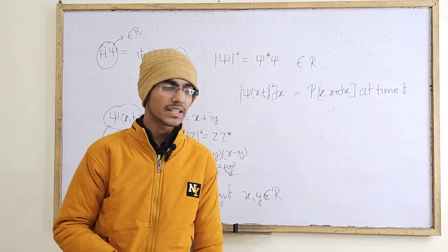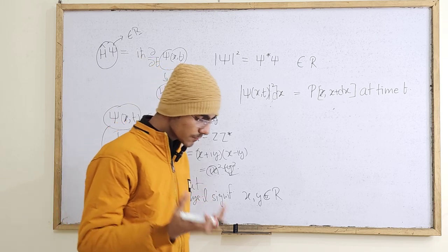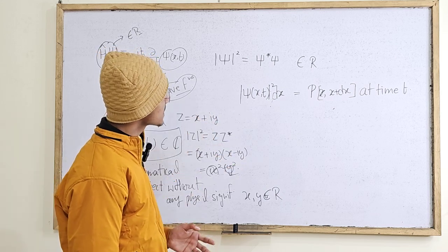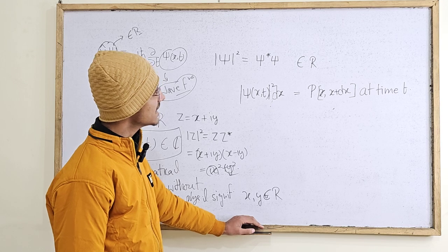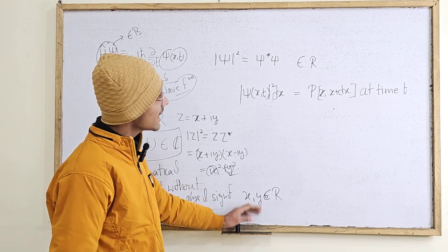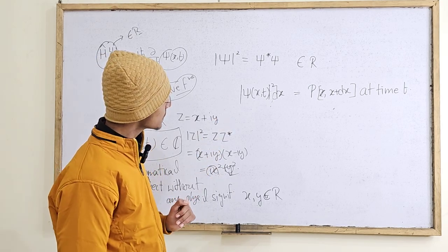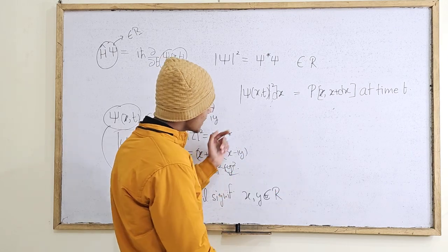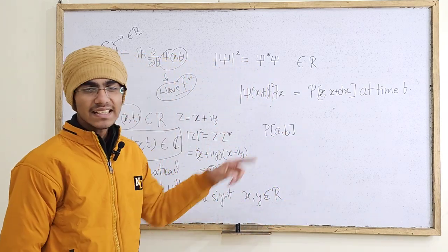This is Born's statistical interpretation — unhone bataya ki jo wave function Schrödinger ne apne equations mein originally introduce kiya, uska koi physical significance nahi hota. Physical significance aata hai is real number se, derived from it by squaring its modulus. Agar mein isko dx se multiply kar deta hun, tab yeh mujhe deta hai ki kya meri probability hai ki mein is particle ko — jo is wave function se describe ho raha hai — x aur x+dx ke interval mein, time t pe, dhound sakta hun. You can generalize it: the probability of finding the particle between a and b at time t is the integral from a to b of |ψ(x,t)|² dx.